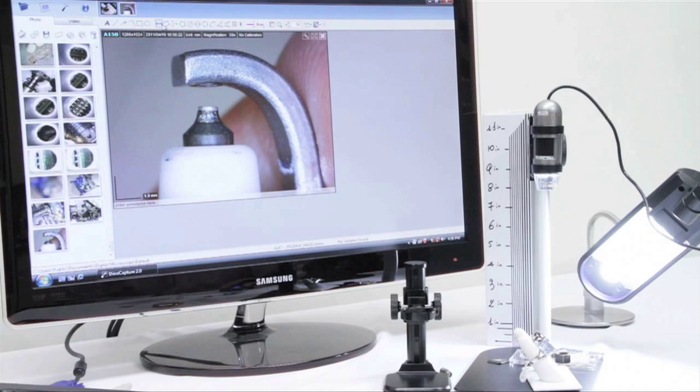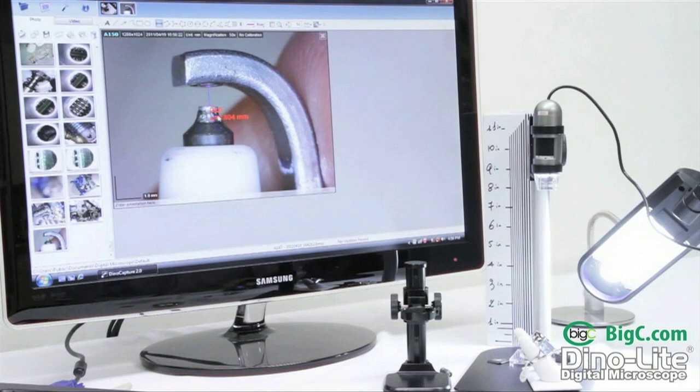We'll pick a line, then select a starting point and ending point, and it will give us our measurement. Here we'll make a measurement of the arc.